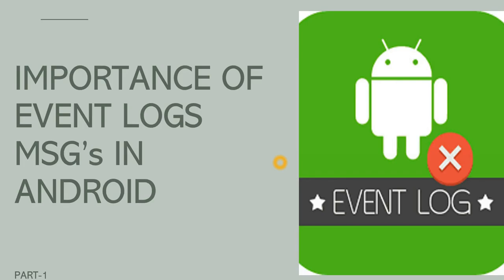When we are triaging or debugging any issue, we need to understand what's exactly happening in the device at the time of that issue. Event logs help us understand which app is running, which service is running in the background, whether the device is booted when the issue happens, and the different states of an activity like onCreate, onStart, onPause, onResume — all listed with timestamps.